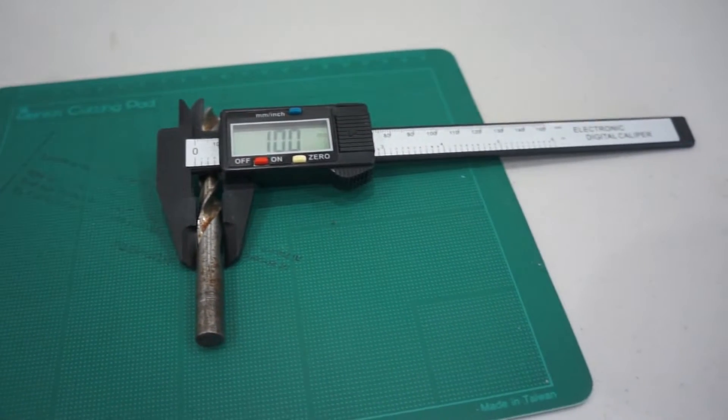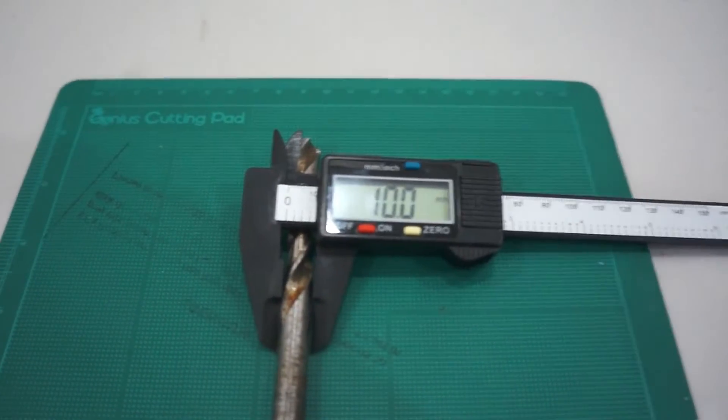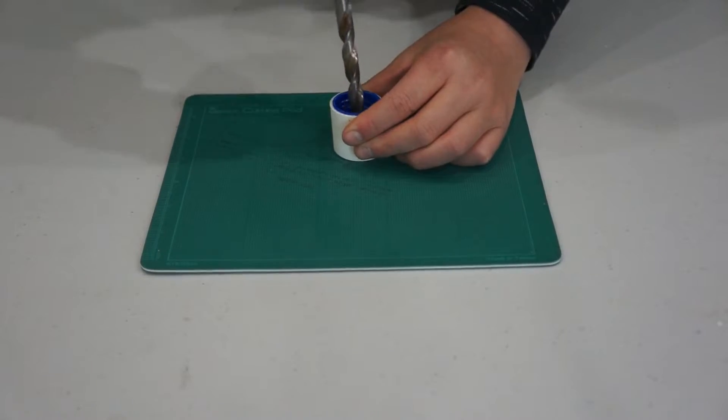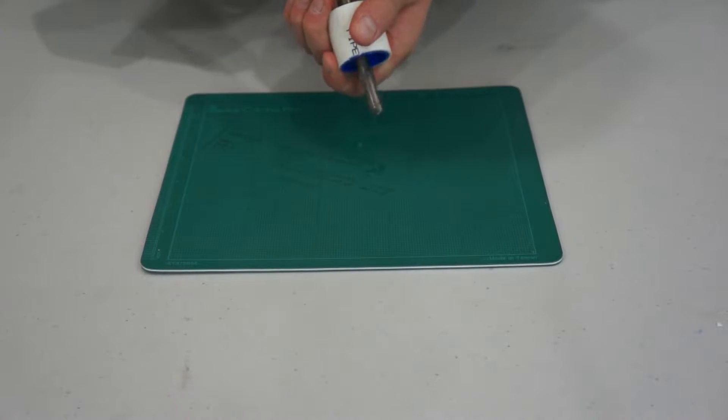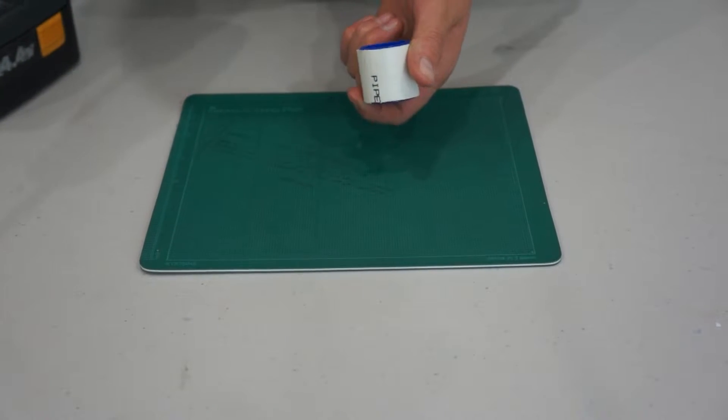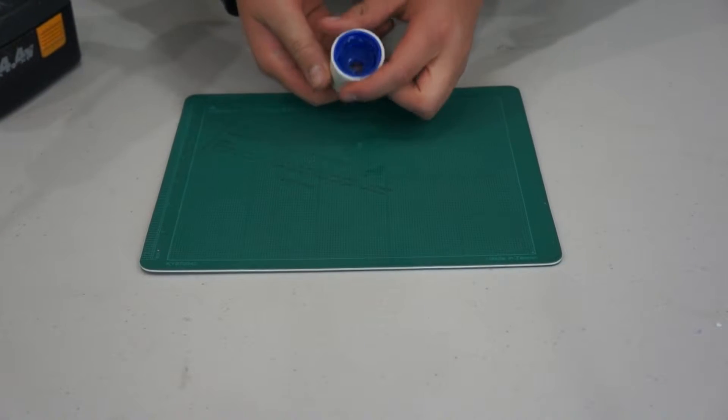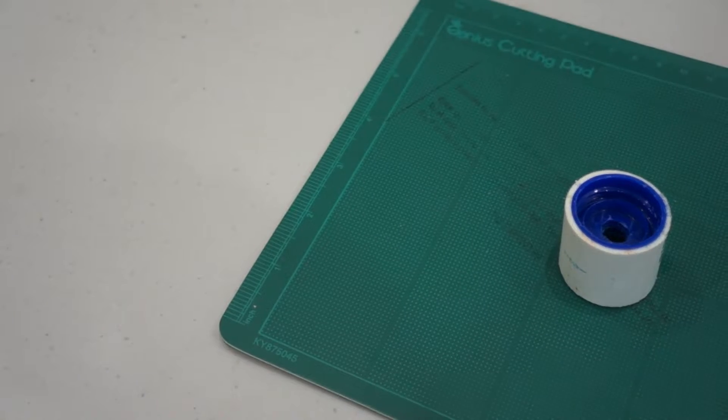Then get a drill bit with a diameter of about 10mm and drill a hole right through the centre of the bottle lids. And there you have it, your very own tornado tube.